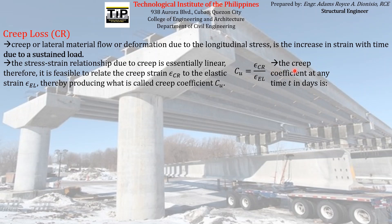Since creep is dependent with time, if we want to find the actual magnitude of the creep coefficient to use for finding the creep loss in terms of T days, we can use this formula. The creep coefficient, which is dependent on time, is equal to the creep coefficient — the ratio of the creep strain and the elastic strain — multiplied by T to the 0.6, all over 10 plus T to the 0.6.